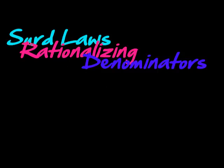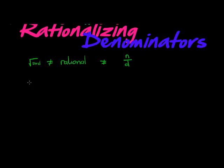Welcome to another lesson. We're still busy with surds, and what we are doing is rationalizing denominators. A surd is not rational. A rational number can be expressed as an integer divided by an integer, so a surd cannot be written as an integer over an integer.